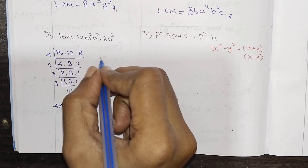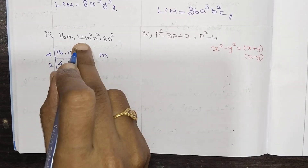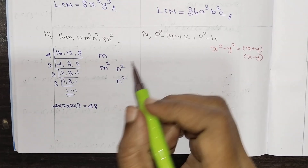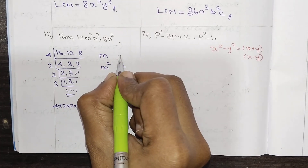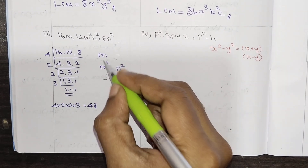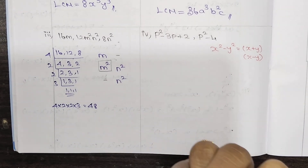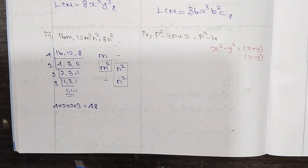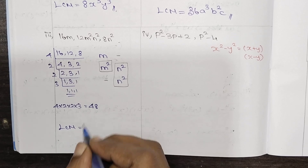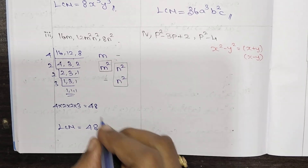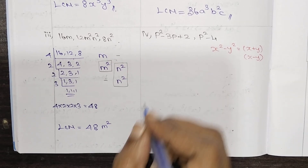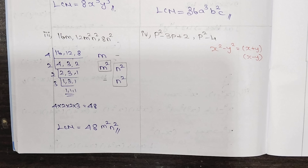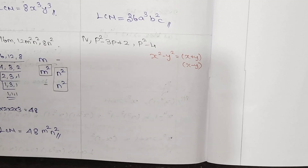Now let's look at the variables. 16M is the first term. The next term is M², N². We have M and M² — highest power is M². Then N² — the highest power is N². So LCM is equal to 48M²N².